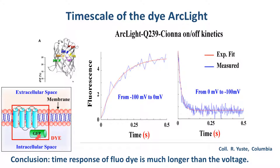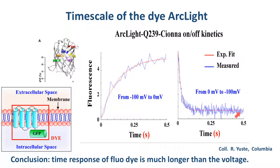A couple of years ago, a new technology appeared where voltage dyes could be inserted in the plasma membrane and emit a signal upon a change of voltage. This is the example of the ArcLight indicator. Upon a step function going from minus 100 to 0 millivolts, the time response is much slower, spanning hundreds of milliseconds. Going from a step response from zero to minus 100 millivolts, you can see how the dye response is much slower than the step function itself.